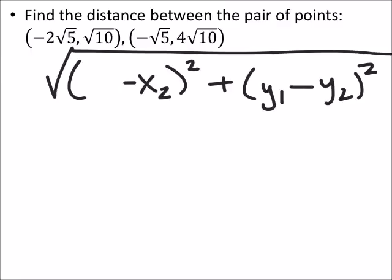I'm going to say that this is going to be my first point values. So x1 would be negative 2 times the square root of 5, and y1 is going to be that square root of 10.